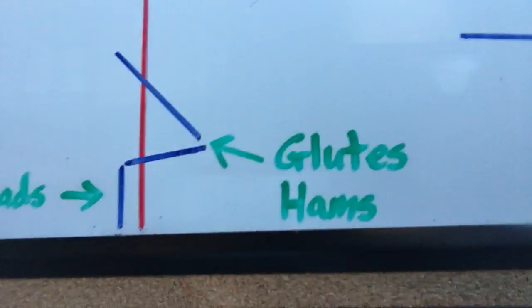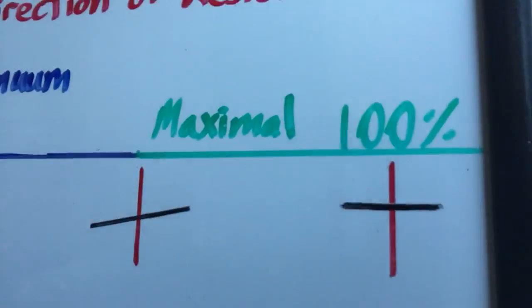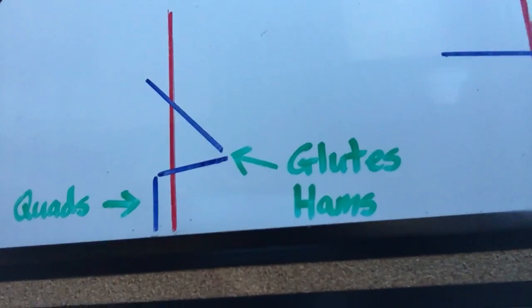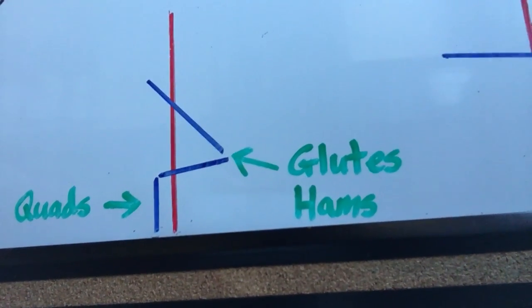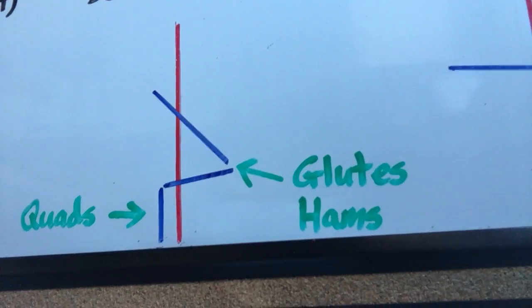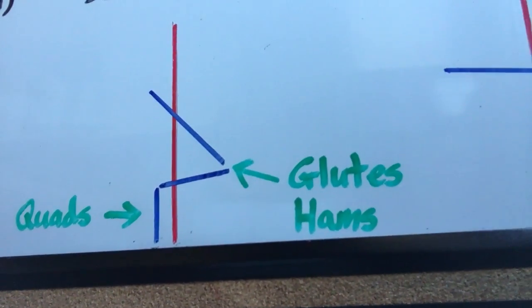We'll see the thigh lever is almost completely perpendicular to the direction of resistance. Therefore, it's the most active lever in this movement. And the torso lever is not parallel or perpendicular, therefore it's still somewhat active. And the muscles that act on these levers to extend the hip are the glutes and the hamstrings. This would indicate that this is a lower body movement.